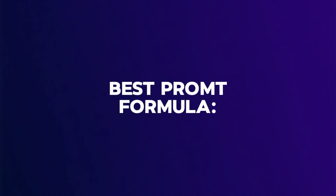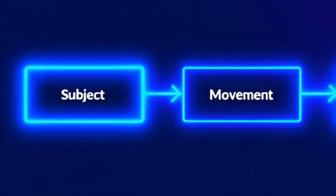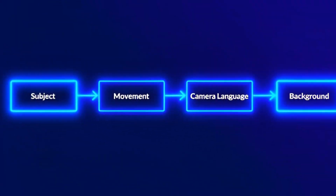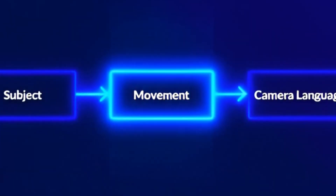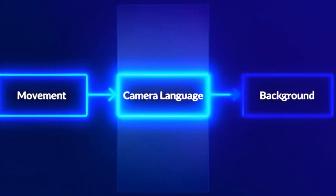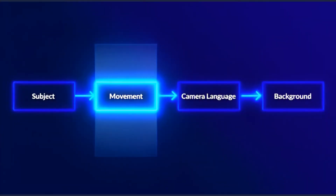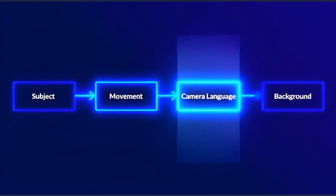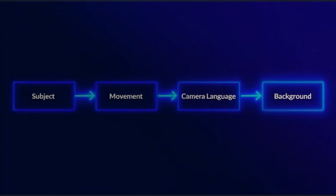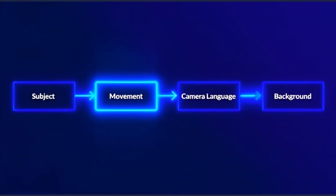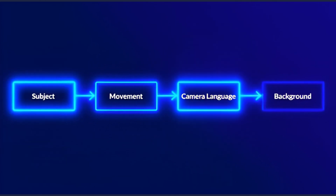The more precise your prompt, the better the result — but don't overcomplicate it with too many instructions. You just need to keep a good balance. The best prompt formula is: first, the subject (the main focus of the video — person, object, animal). Next, movement — how the object is going to move and camera movement. Then background or environment: a specific setting, lighting, atmosphere. And at the end, it's good to add style descriptors like cinematic, ultra-realistic, calm atmosphere, and so on.